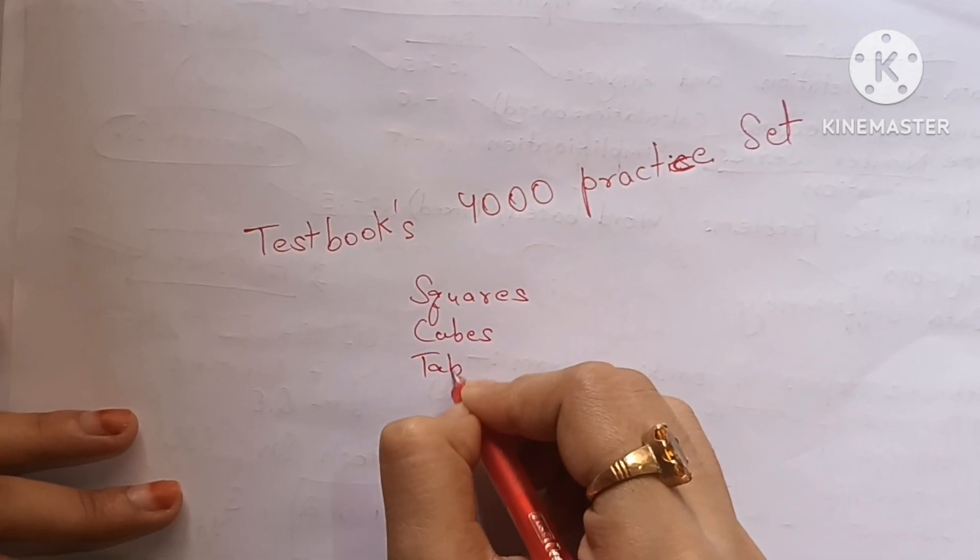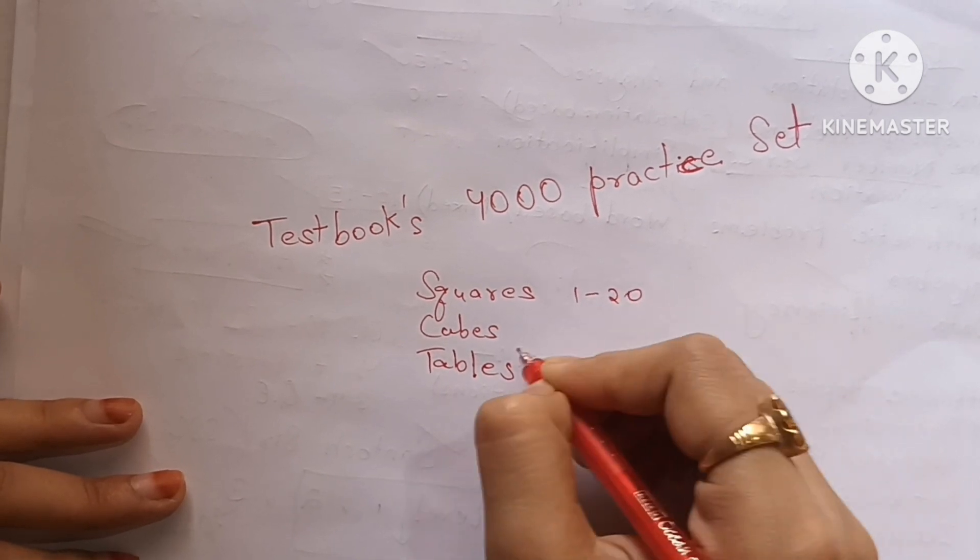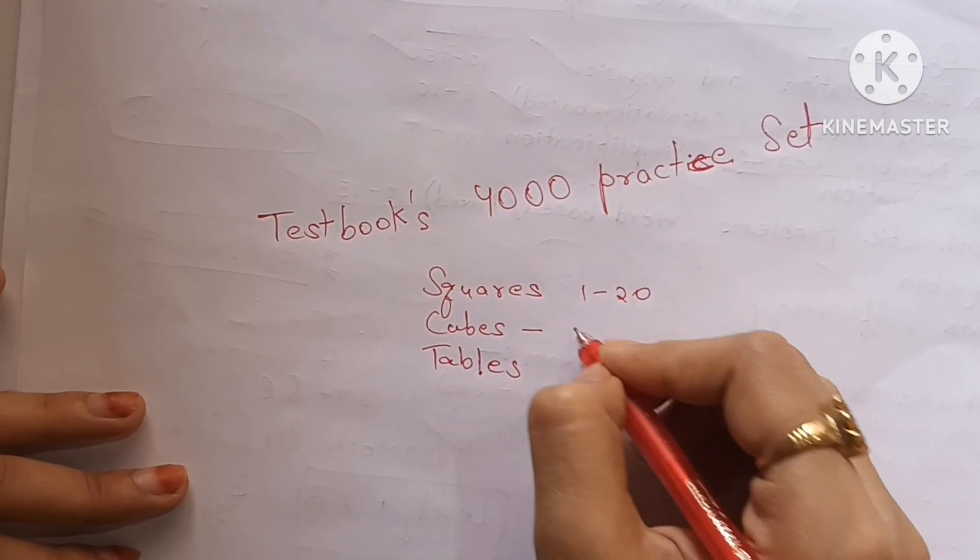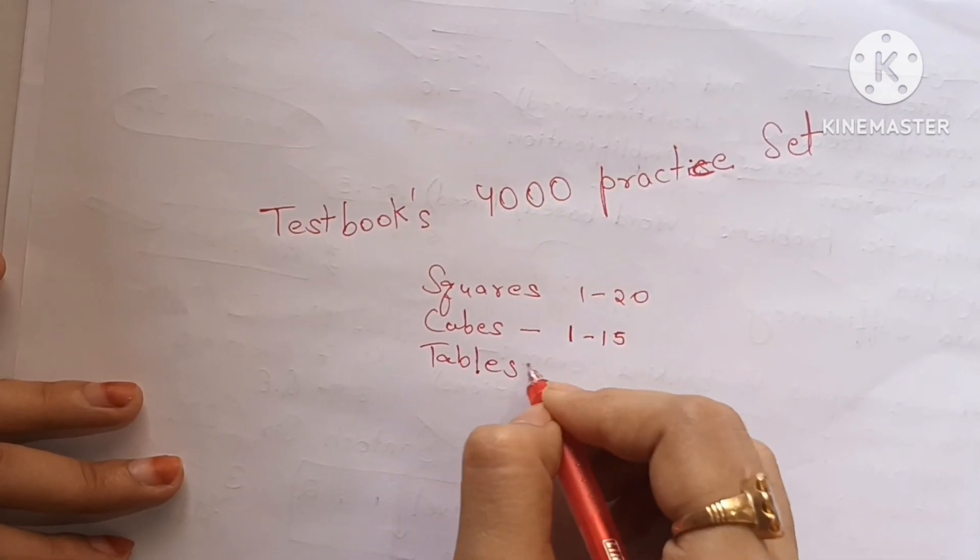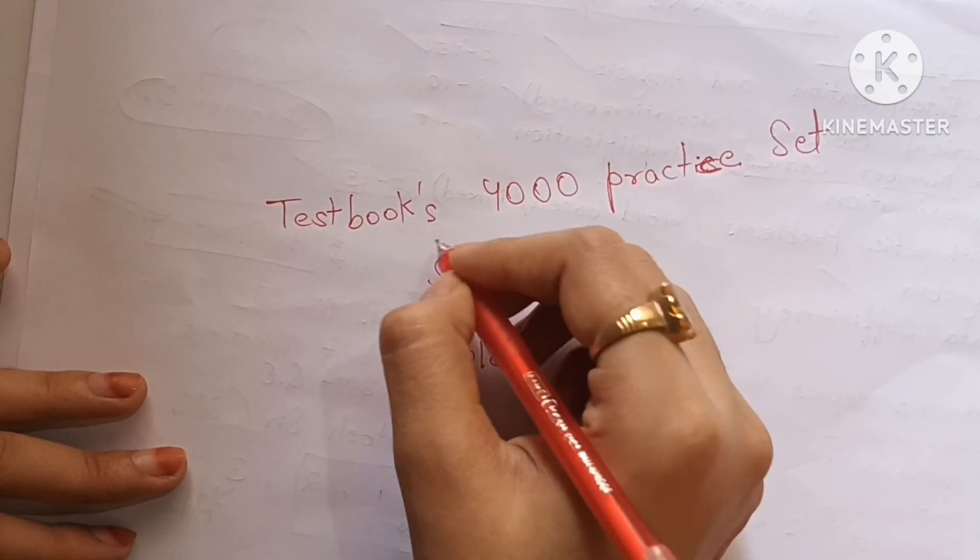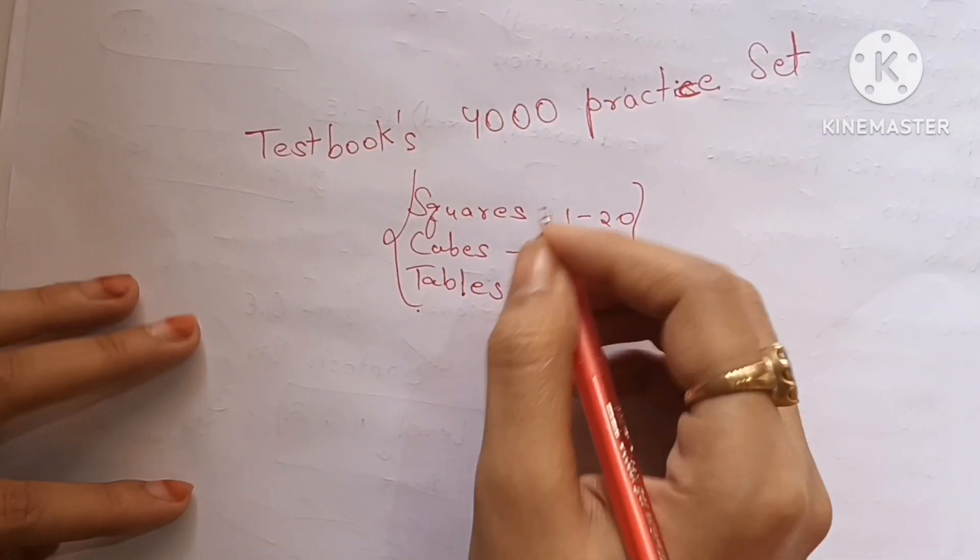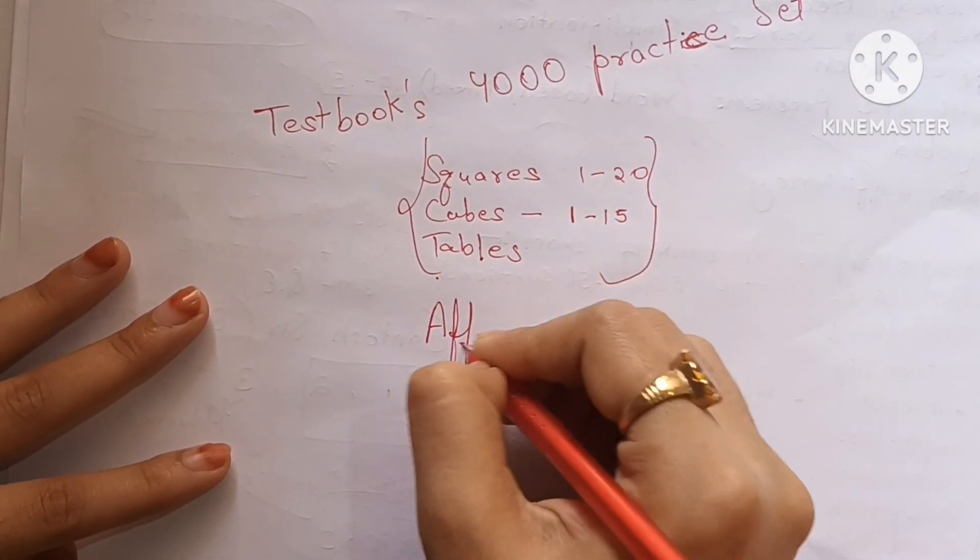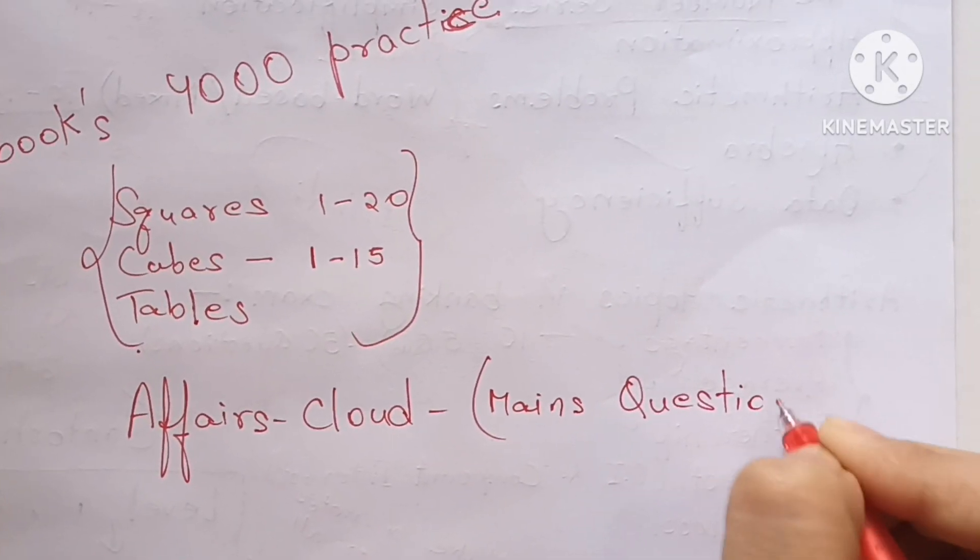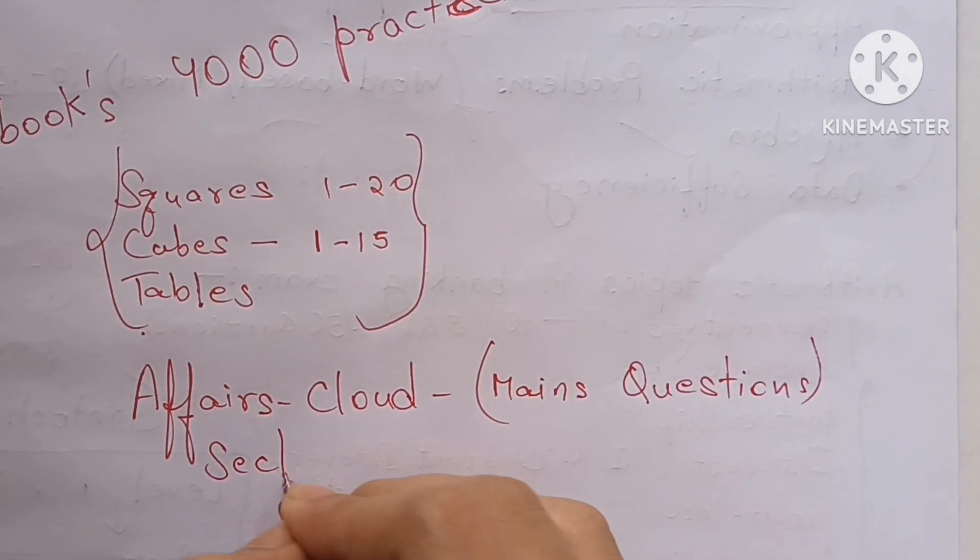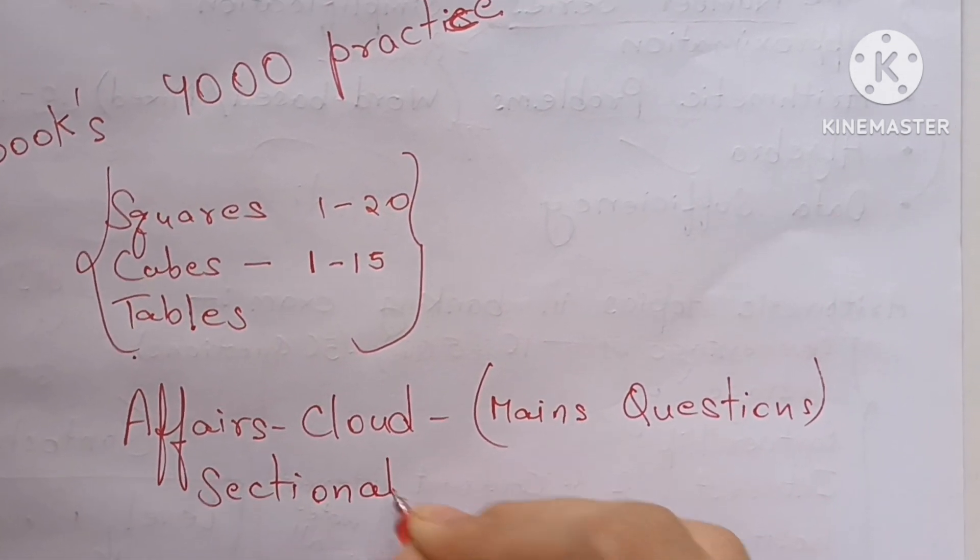Because in exams these learned things will save your time. Once you complete the topics, shift to mains exam questions. On Affairs Cloud there are particular exam courses in all courses section. Nowadays they have started charging for that, but if you open the previous year path you can get the topic-wise mains level questions from there for free. So practice there. You must have bought some mocks too, so practice the mains sectional mocks.